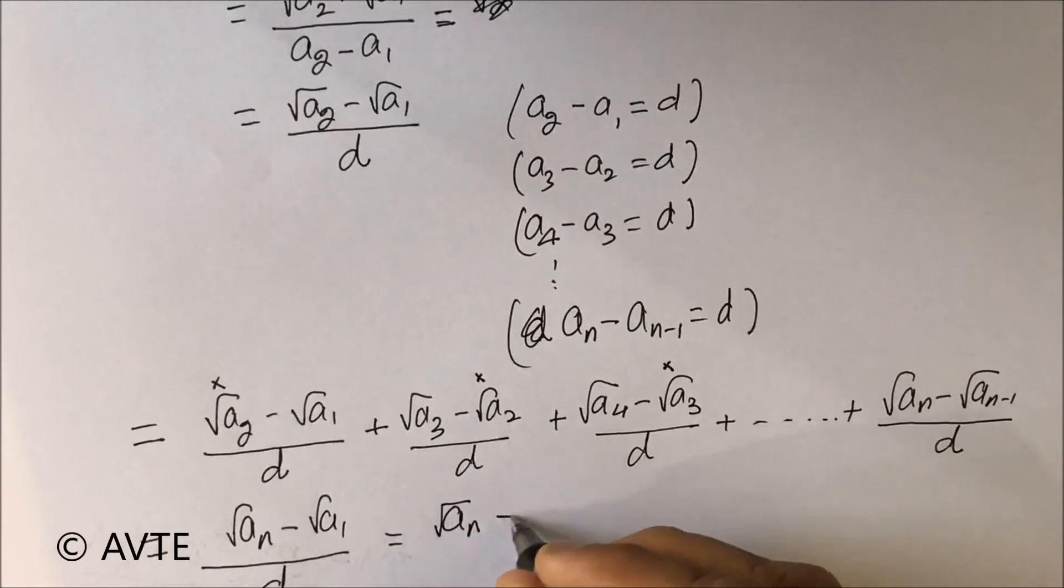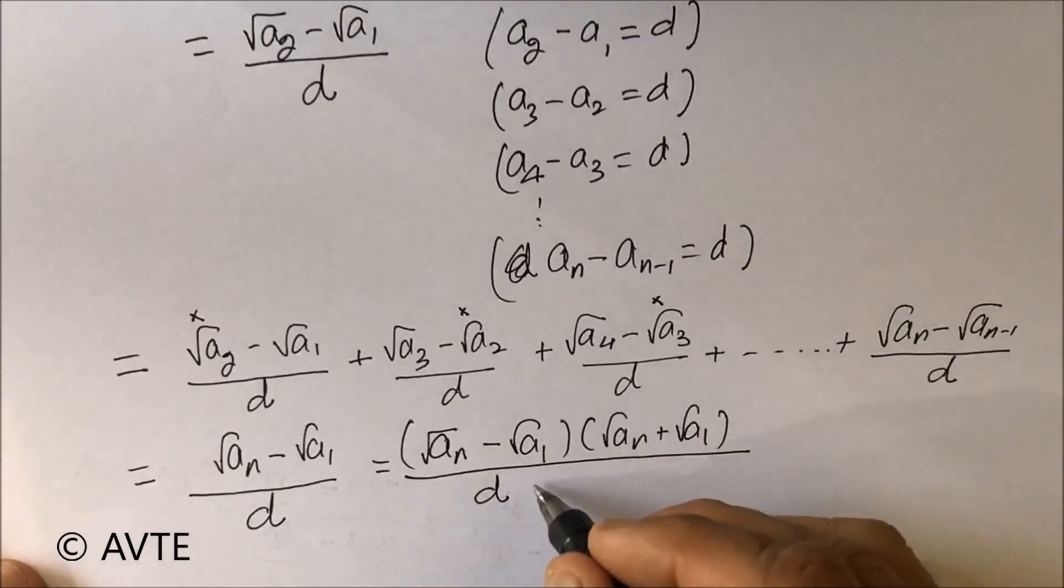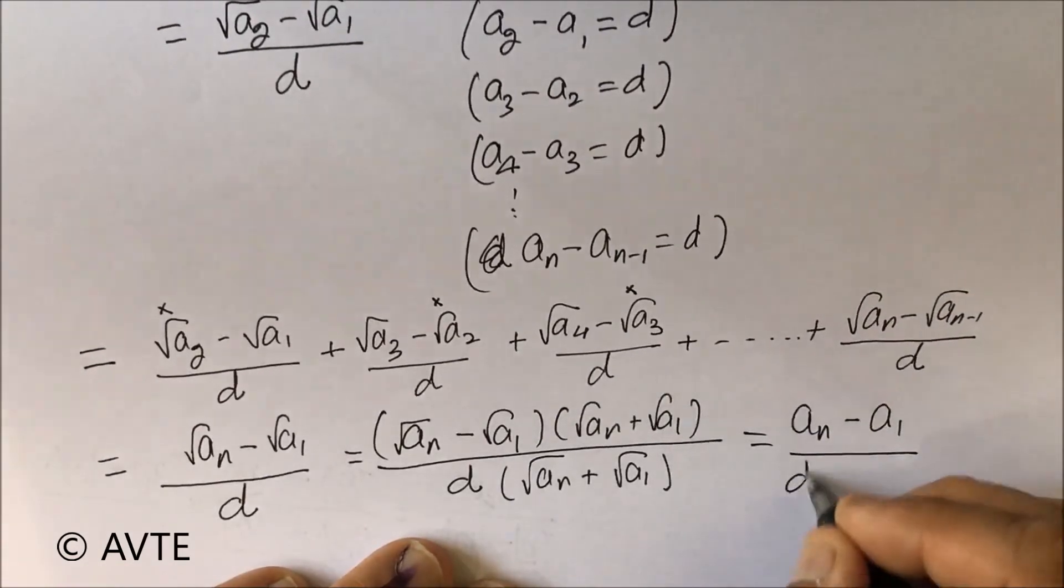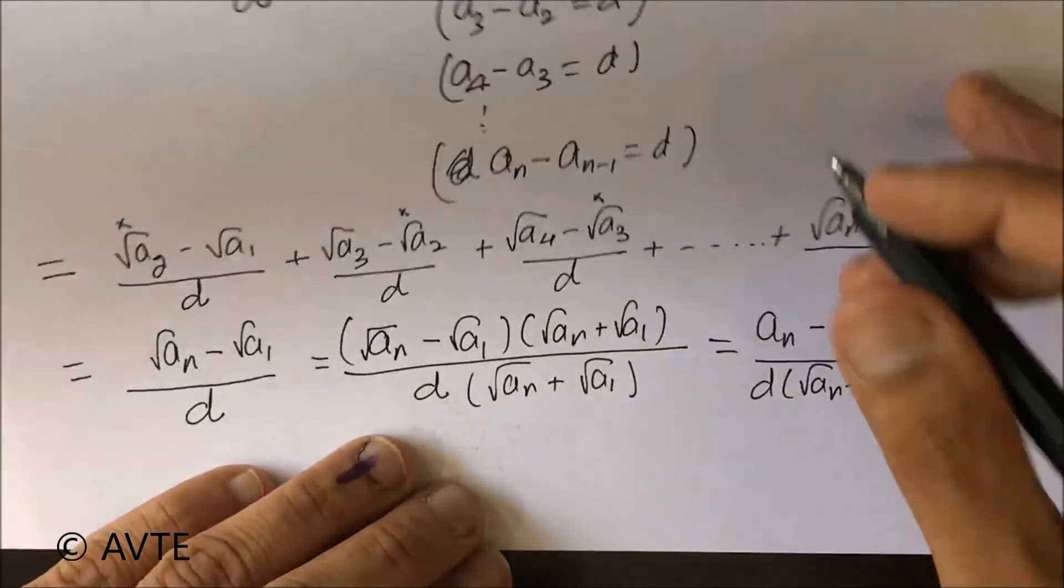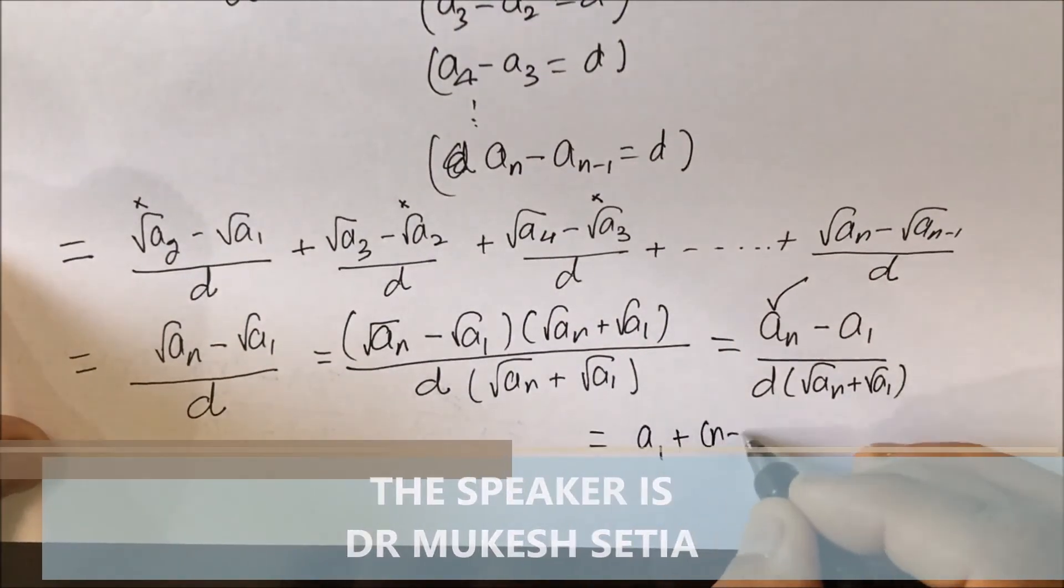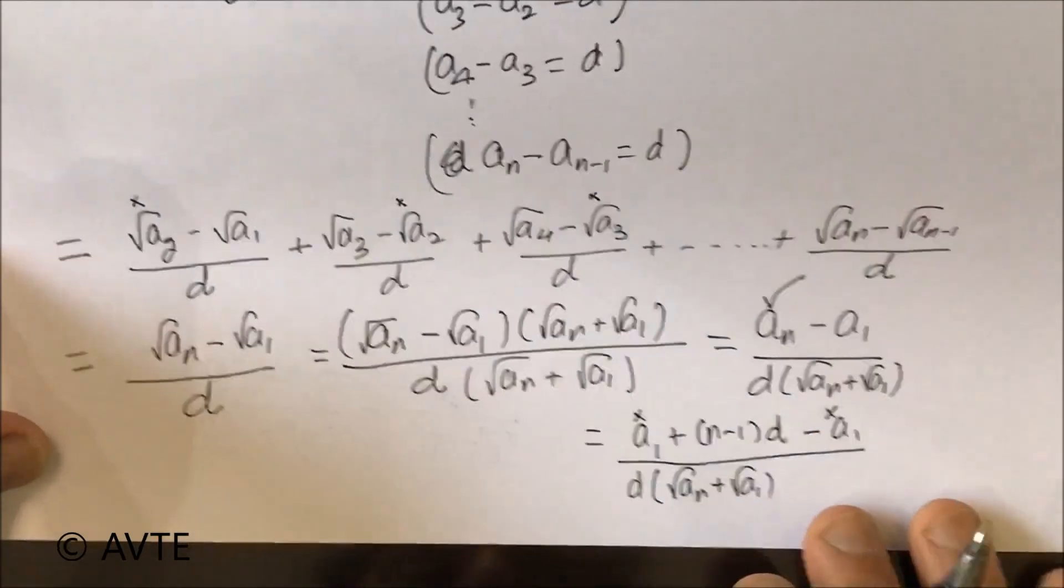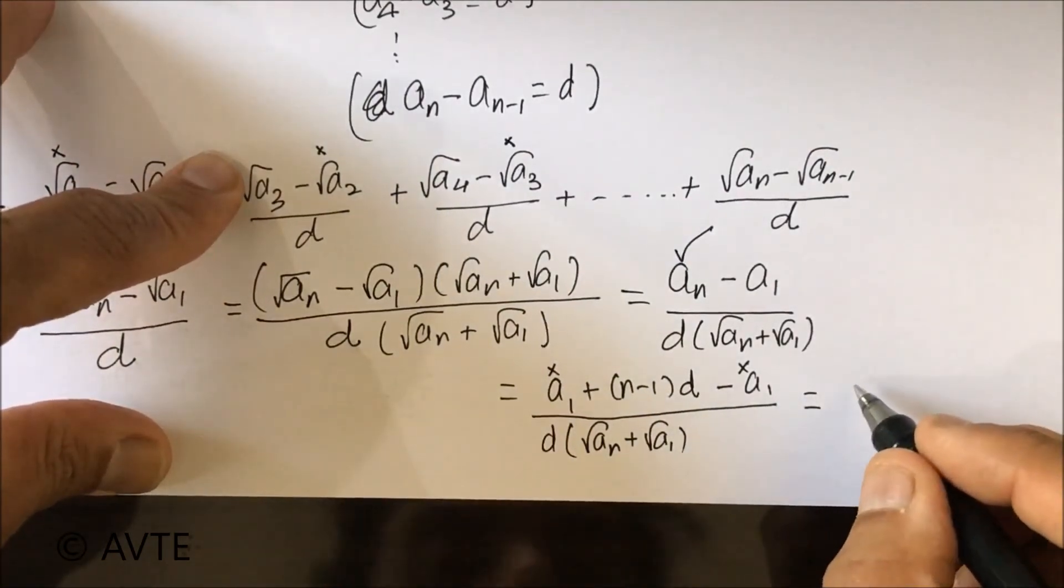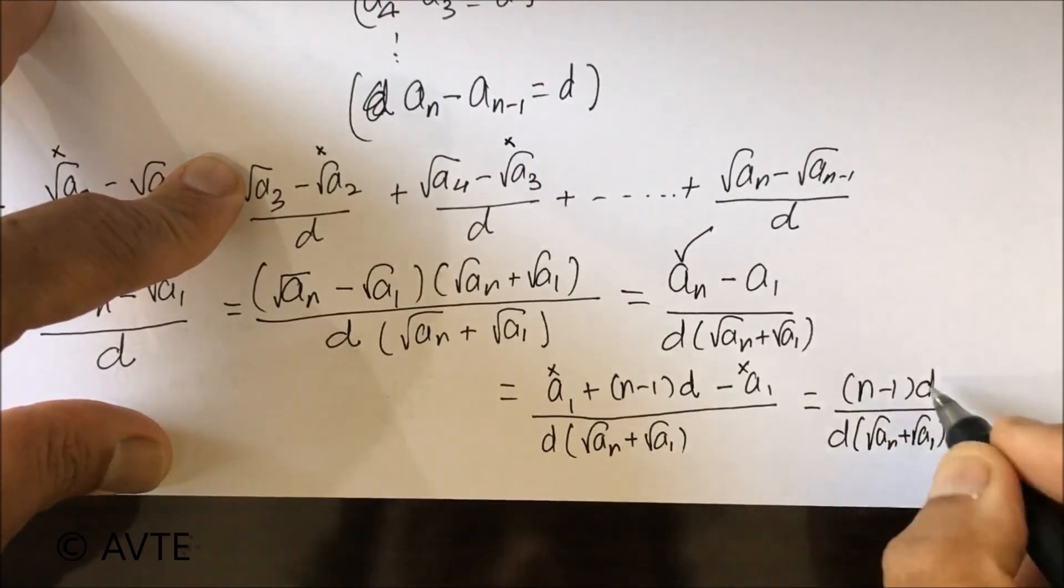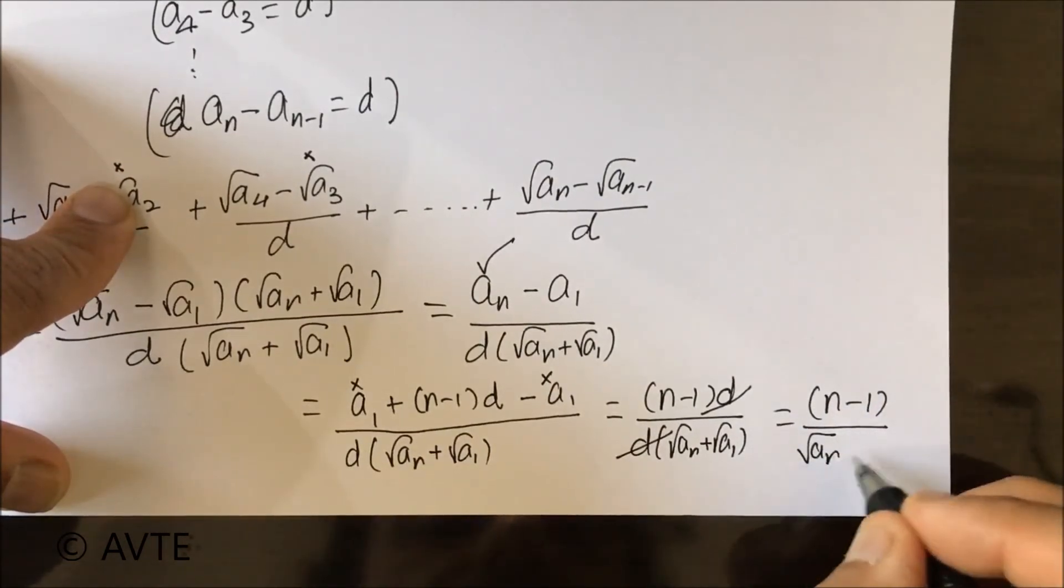This is the last term, the general term, so we can write it like this. These two terms are gone, so we are left with—and finally this d is also gone. You can see that this is what we need, so this is the required answer.